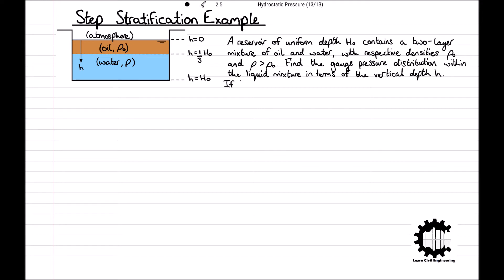If H0 equals 10 metres, rho 0 equals 800 kilograms per metre cubed, and rho equals 1000 kilograms per metre cubed, find the pressure at the mid-depth. Again, if you would like to attempt this question yourself before we go through the solution, you can pause the video here.